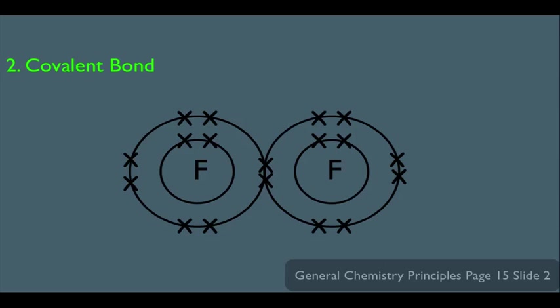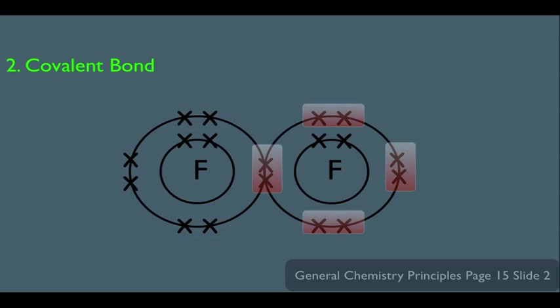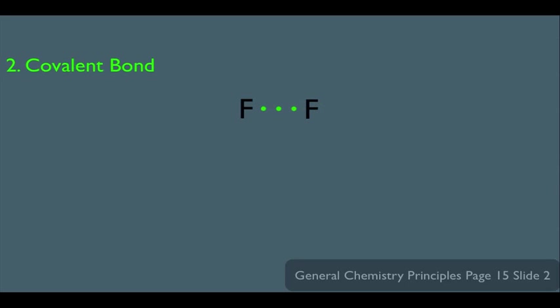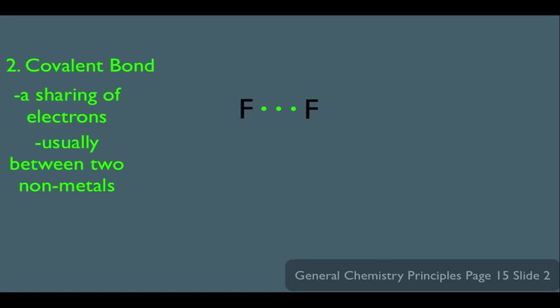When you make this bond, the left fluorine now technically has an octet, and this is also true for the right fluorine. So technically there's an incentive for fluorine to bond to itself so that they can both gain an octet. This is a case of electronic configuration dictating how atoms bond. So what's a covalent bond? It's simply a sharing of electrons, and it usually occurs between two non-metals.